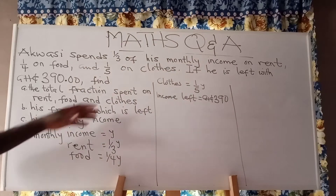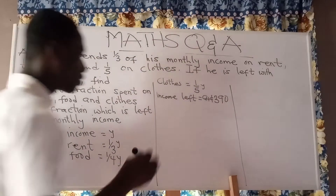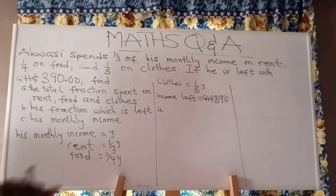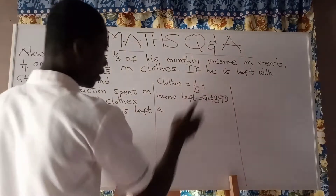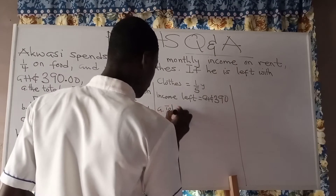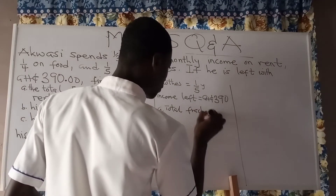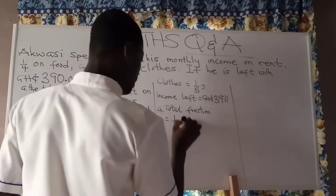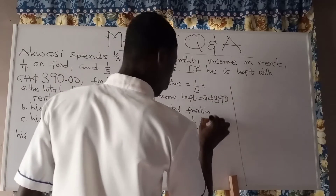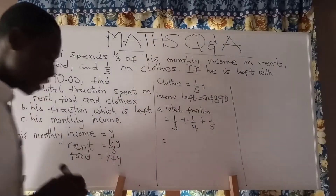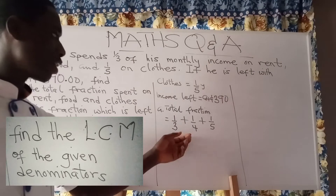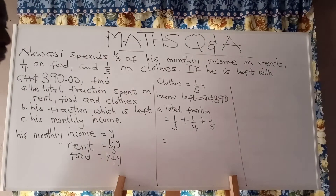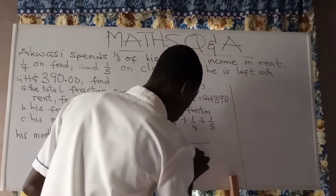For part A, we find the total fraction spent by adding all the fractions spent: one third plus one fourth plus one fifth. We need to find the LCM for 3, 4, and 5. The LCM is 60.